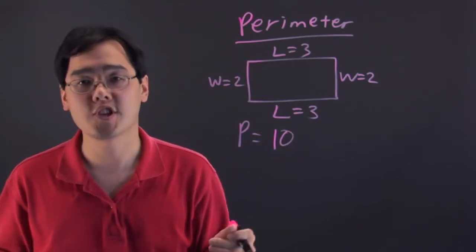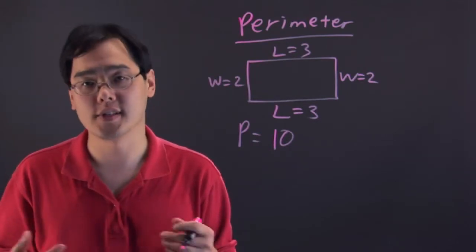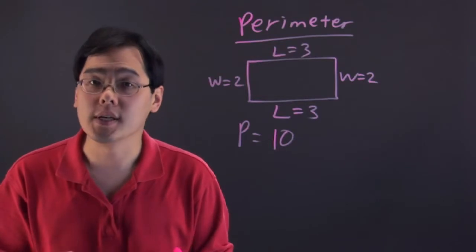Now, perimeter applies to all sorts of shapes whether it be hexagons, polygons, triangles, squares, rectangles, etc. The one exception though is that of a circle.